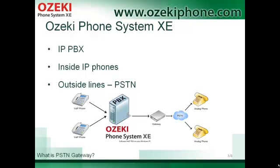Azaki Phone System Exi is an IP PBX that is used in IP networks. It is a switch station that can connect internal IP phones of a company and can share external lines to the internal phones. An external line can be a PSTN line. A VoIP gateway and Azaki Phone System Exi together make it possible that IP phones can call analog phones and analog phones can call IP phones.